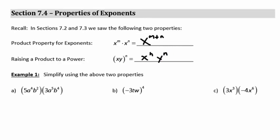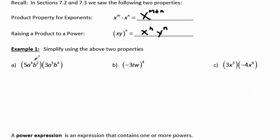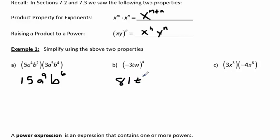Let's simplify a couple examples in example 1. 5a to the 4th times b squared times 3a to the 5th times b to the 4th is 15a to the 9th b to the 6th. And negative 3tw to the 4th: negative 3 to the 4th is positive 81, t to the 4th, w to the 4th. Also, 3x cubed times negative 4x to the 6th will be negative 12x to the 9th.